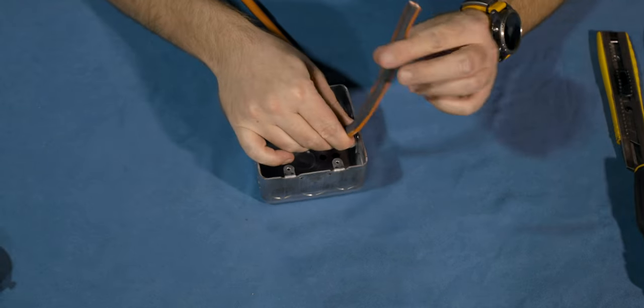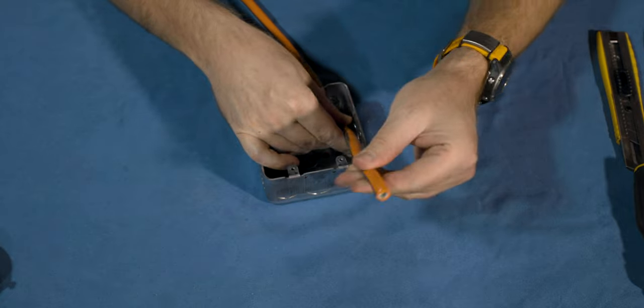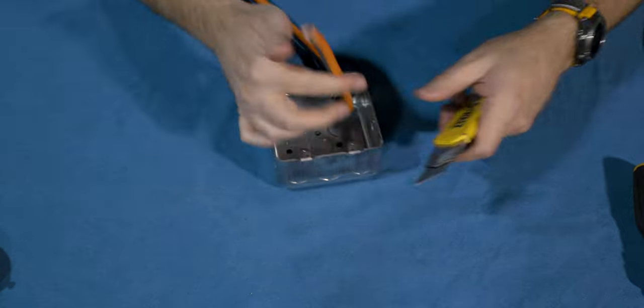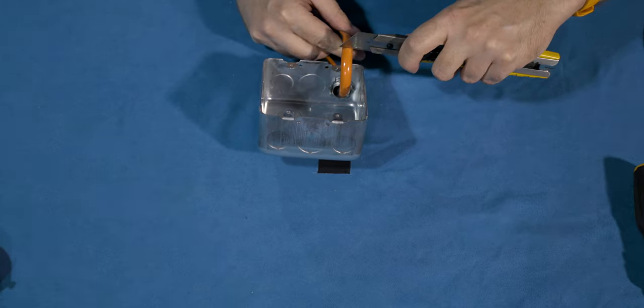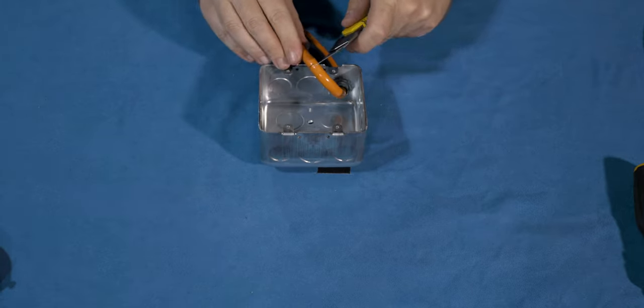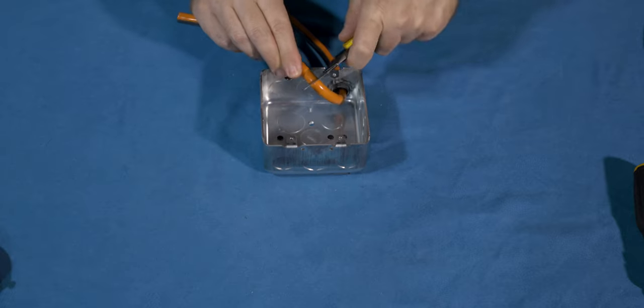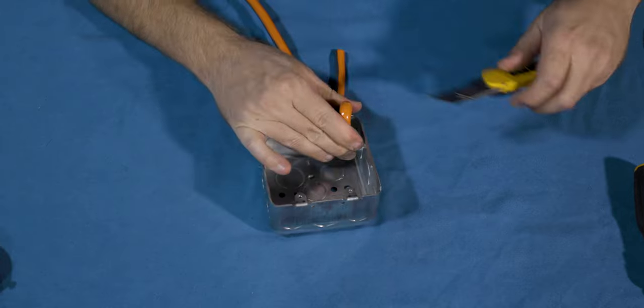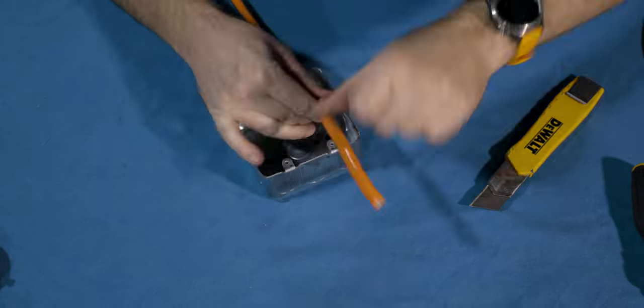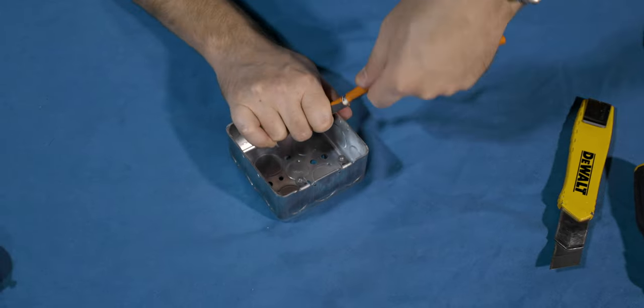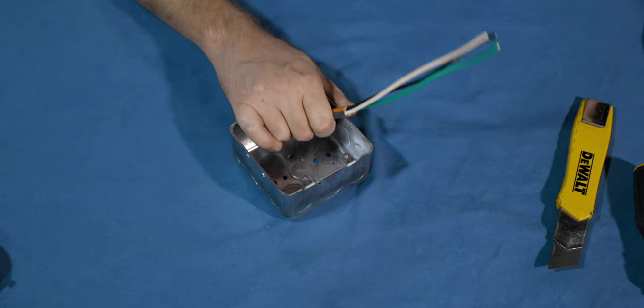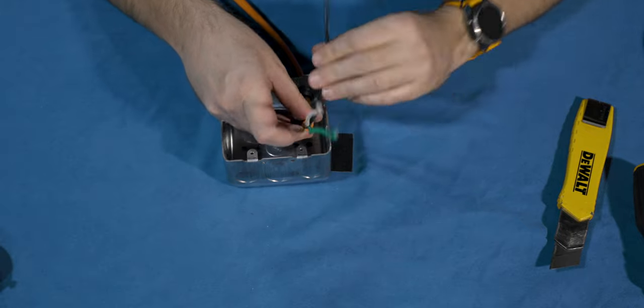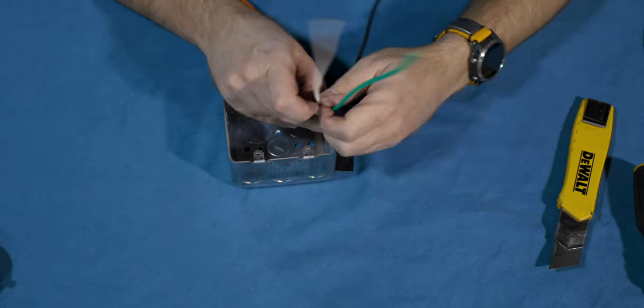Alright, so we're going to take the outer insulation off here. Tool I forgot to mention, razor knife. Just gently score it. You don't want to go too deep because you don't want to cut into the wires inside this outer casing here. Right there. And then we have our three wires. So we got our positive, negative and our ground.